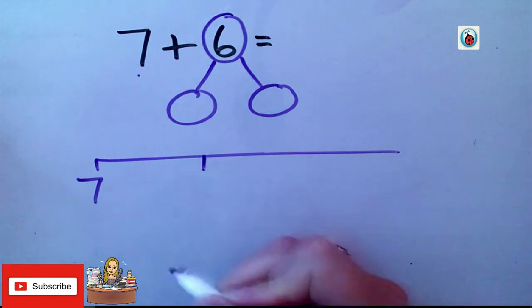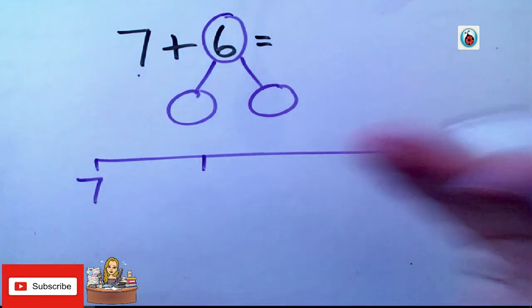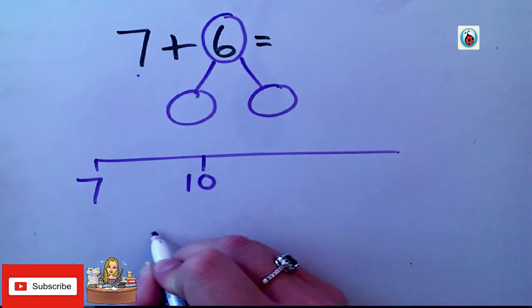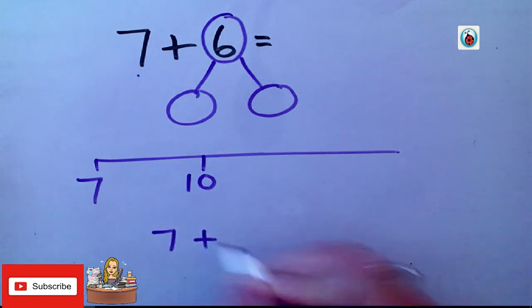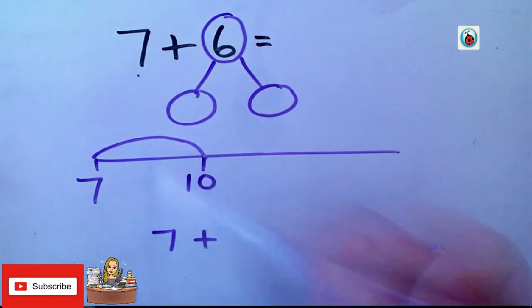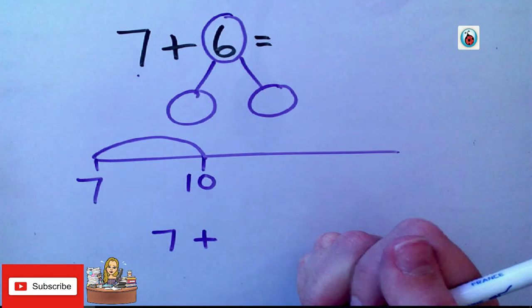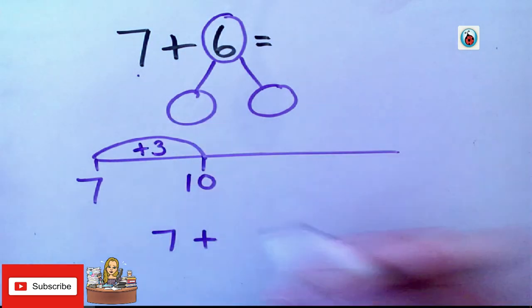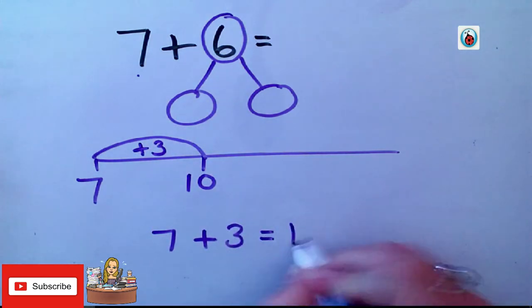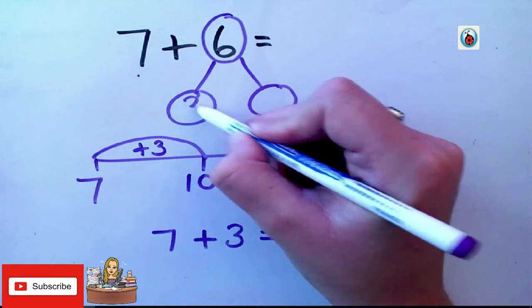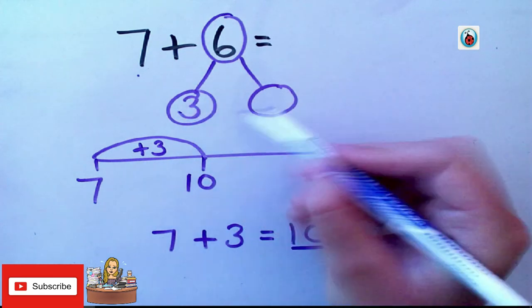What do I need to get to? I need to make 10. So, now, I do 7 add something equals 10. What do I add to 7 to make 10? Brilliant. I add 3. So, I add 3 to make my 10. So, this number here, I've partitioned 6 into 3 and what's my other number?